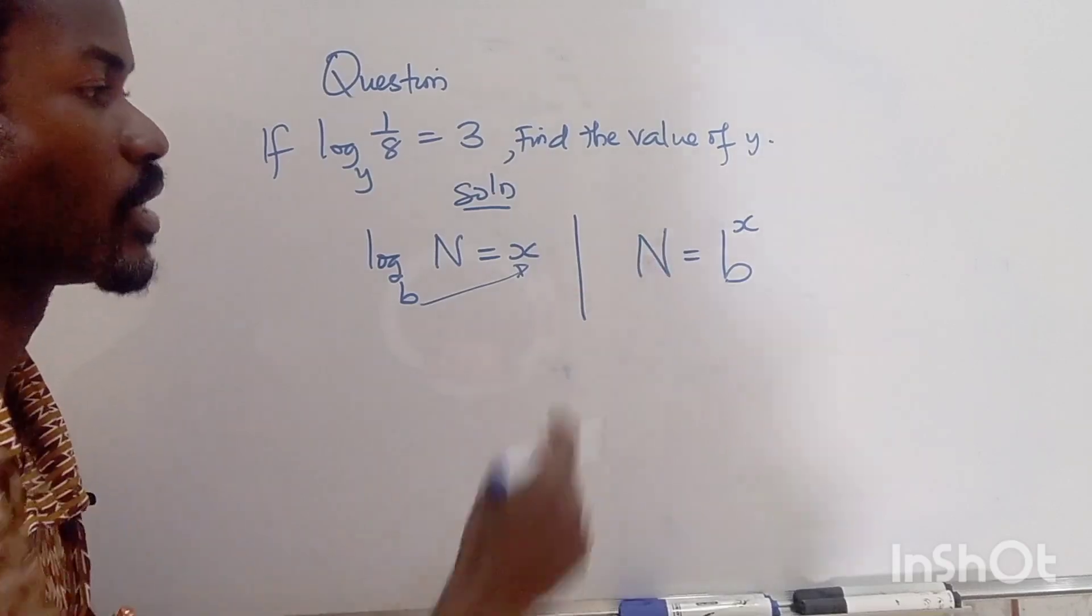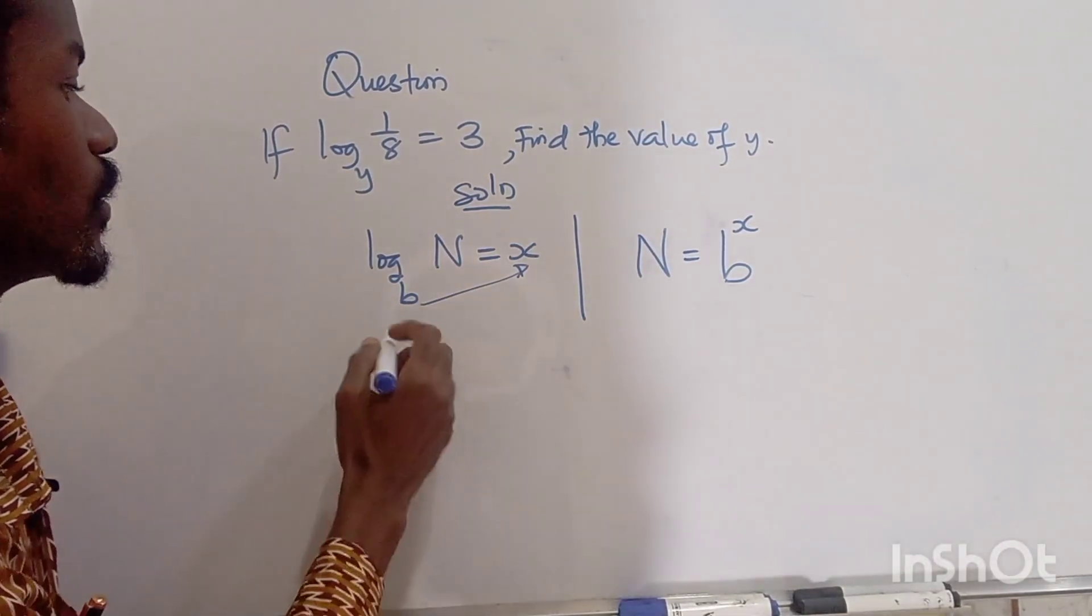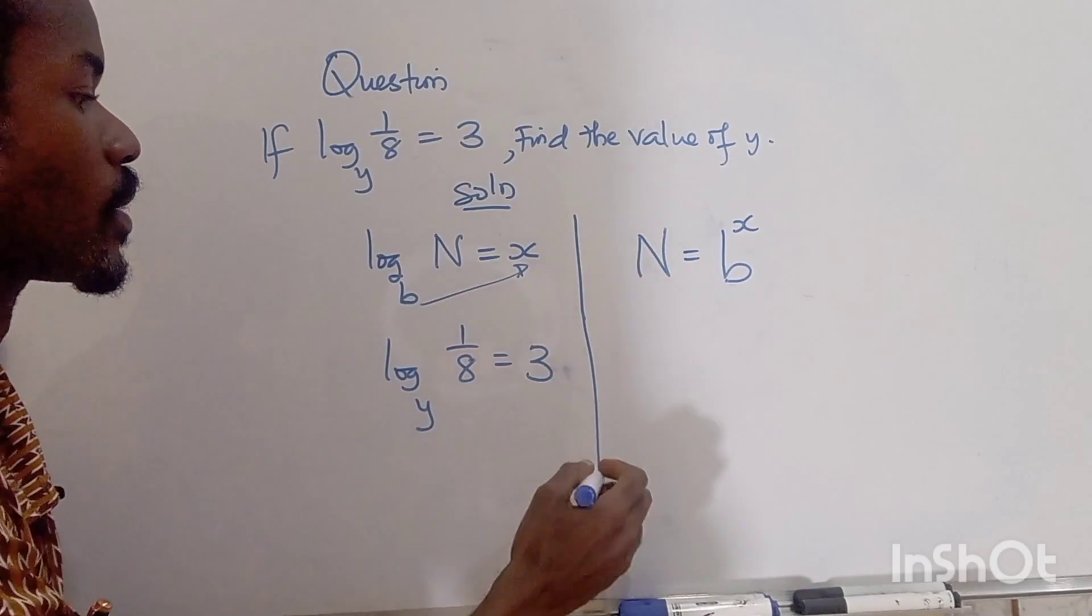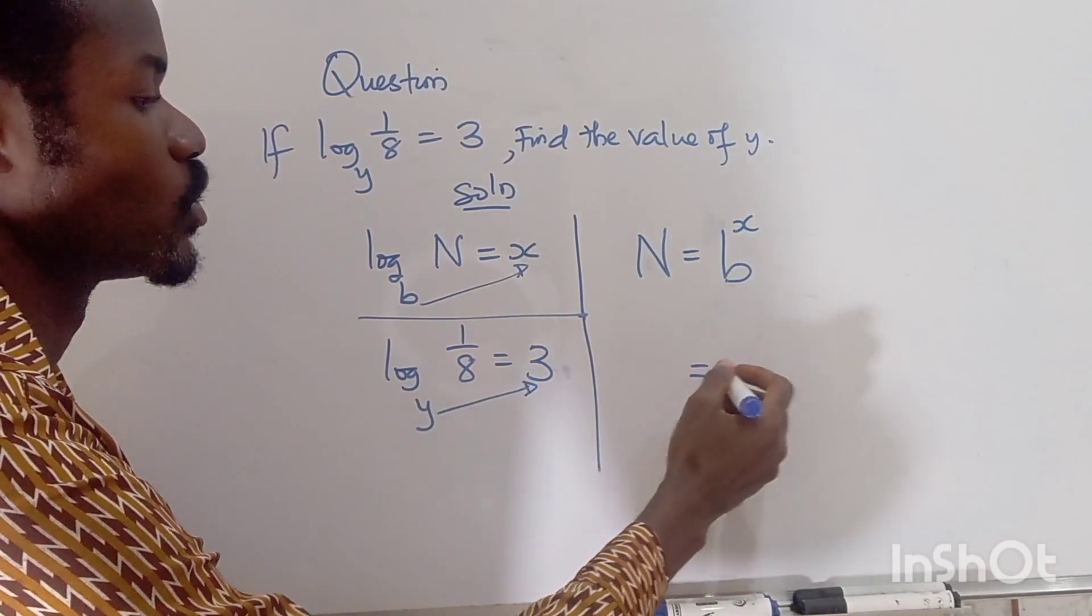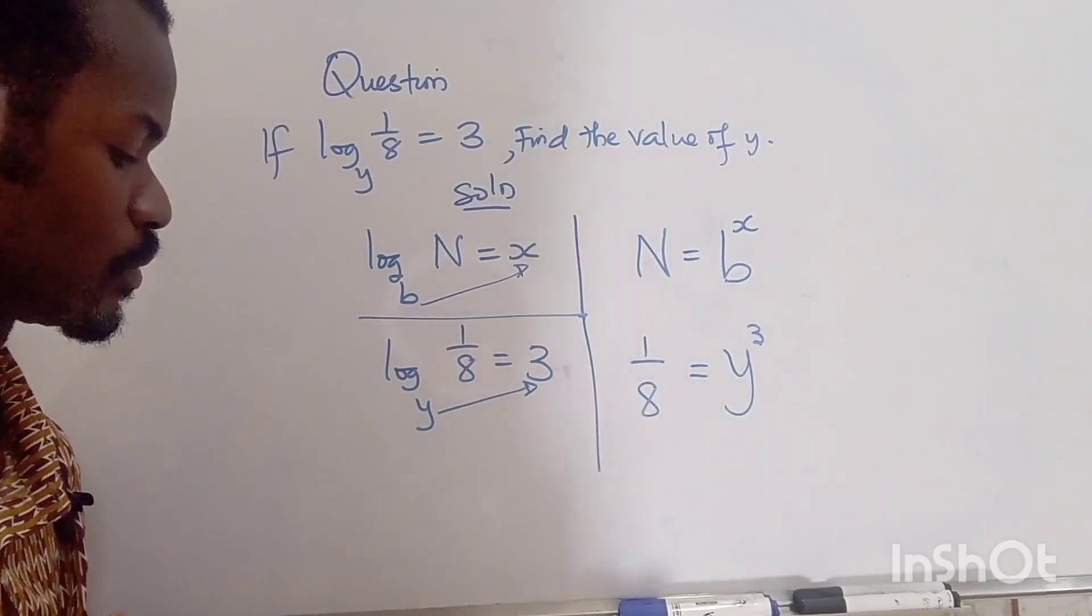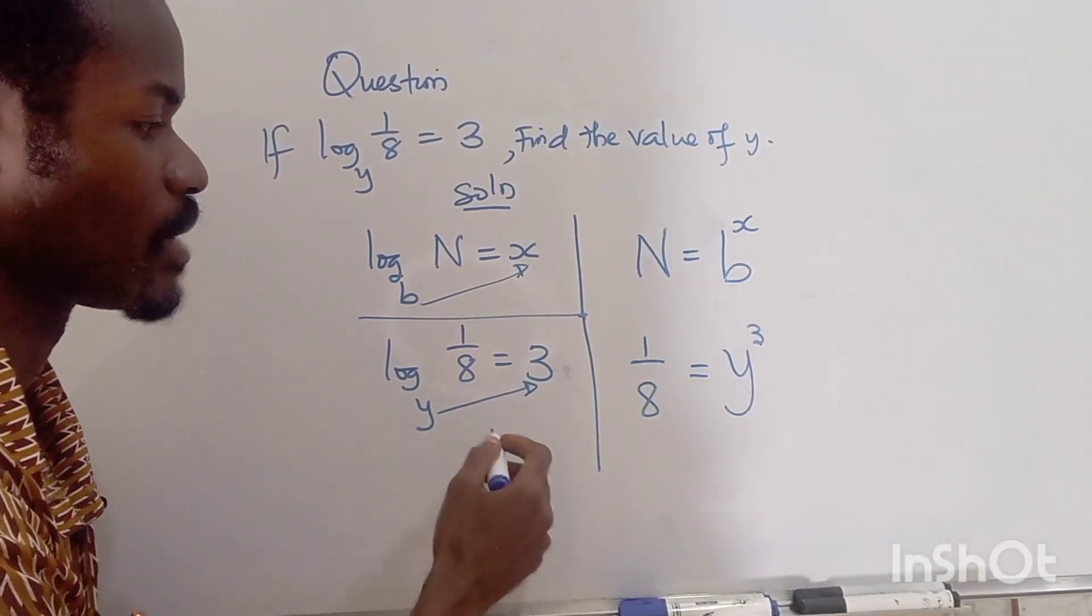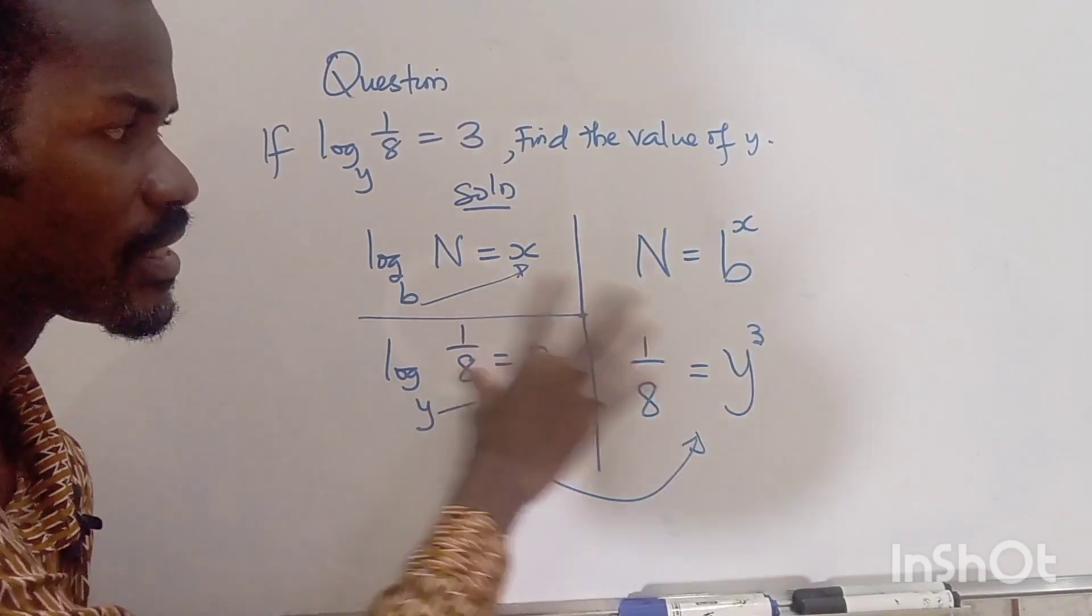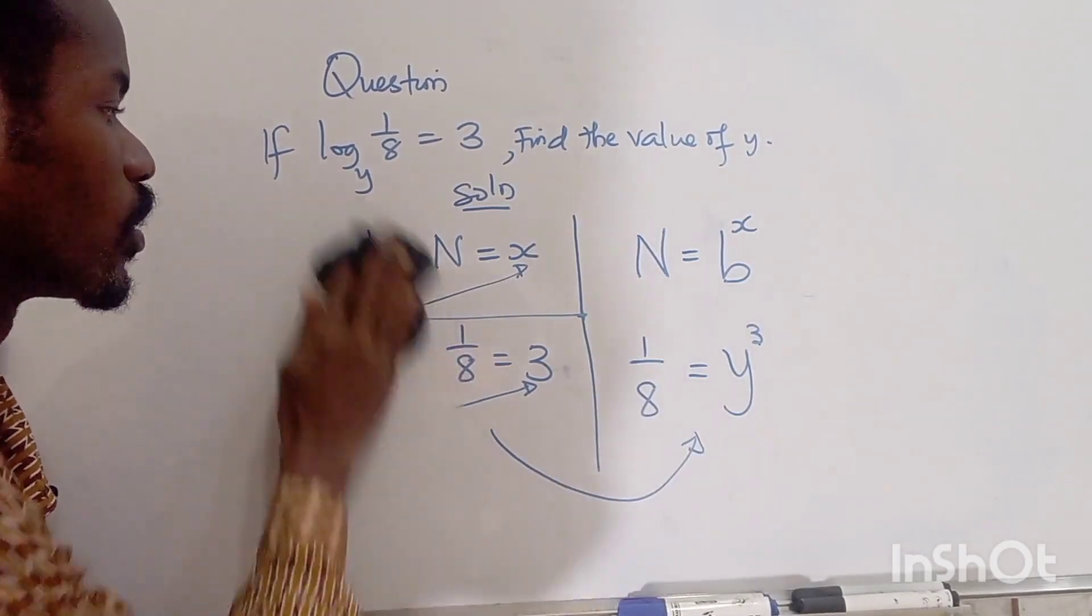So we are going to apply it to the expression we have. We have log base y of 1 over 8 equals 3. So I want to write it in this form, so this is going to come here and take this up as a power. And we have 1 over 8. So this is log form, this is index form. They mean that your logarithm form can be changed to index form and your index form can be changed to log form. This is how to convert to index form. Now with this form we can solve the problem further.